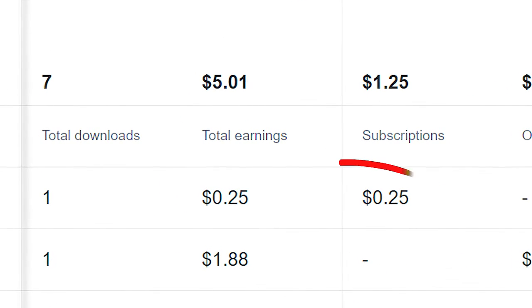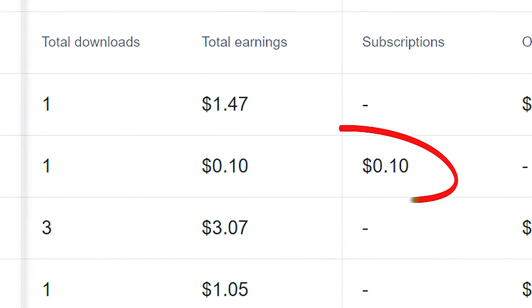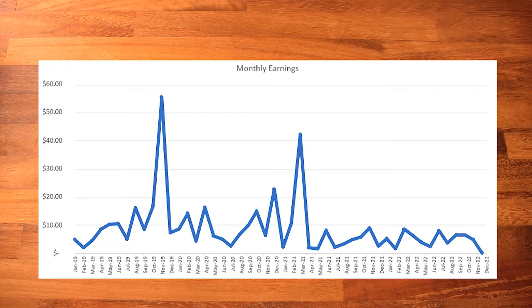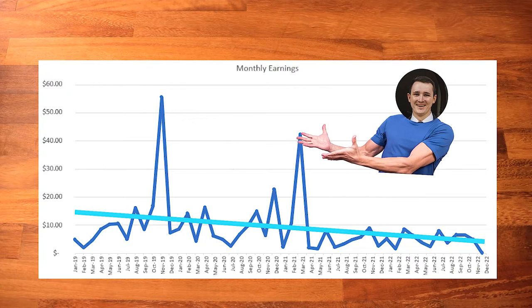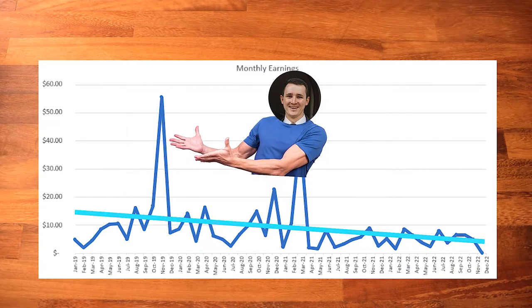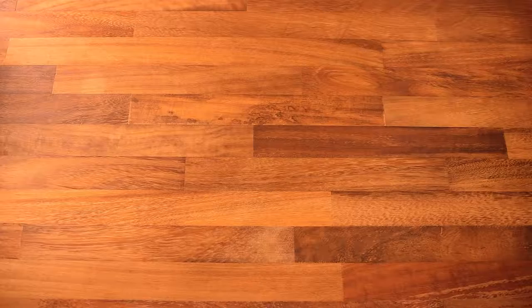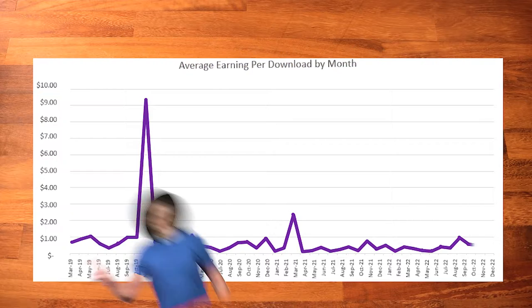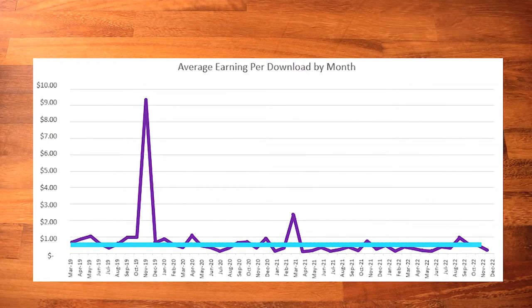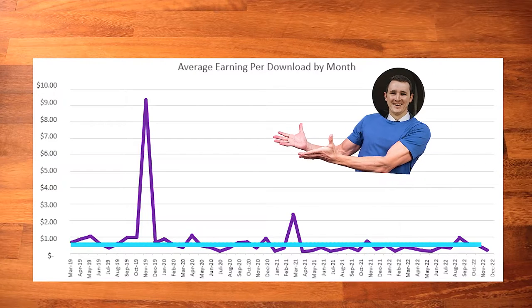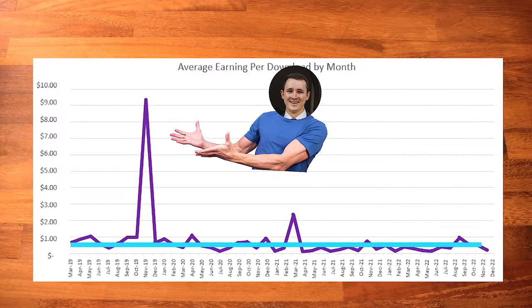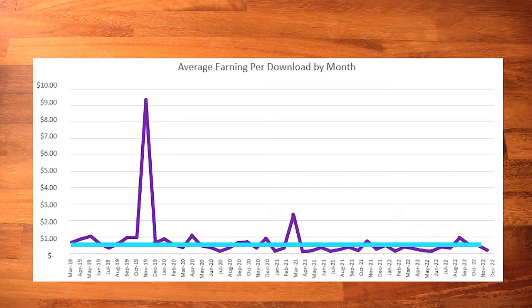We can look at average earnings per month and see the disappointing decline in the average — that's this straight line — and to be fair, it is quite a shallow decline. Note that two spikes are when some big single sales came through, so these shouldn't be considered expected or regular. We can also look at average earnings per download month by month, and we can see that this is reasonably consistent and stable. These two points have those single sales in them.